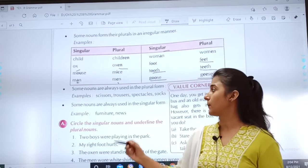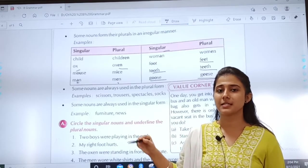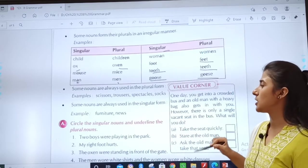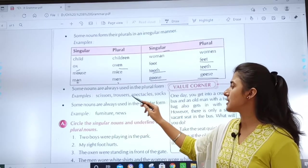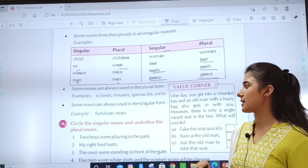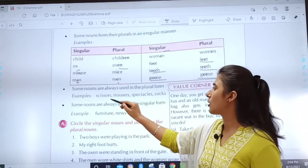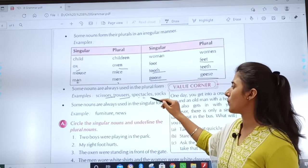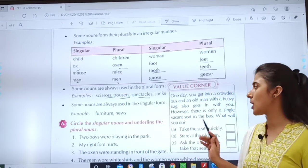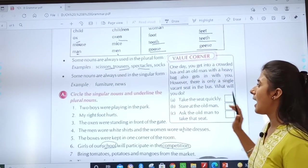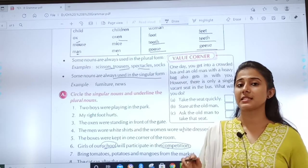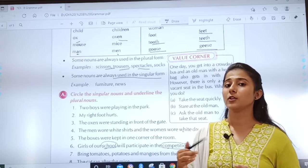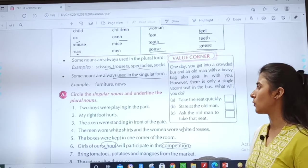So, now see. Some nouns are always used in plural form. Examples. Scissors, trousers, spectacles, socks. These are always used in plural form. A pair of scissors, trousers. Right? And some nouns are always used in singular. Example, furniture, news. Right? They always remain in singular.